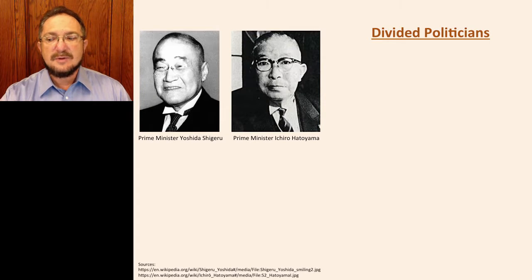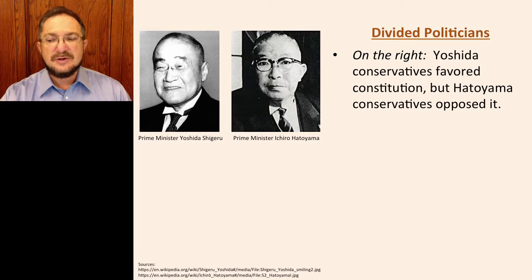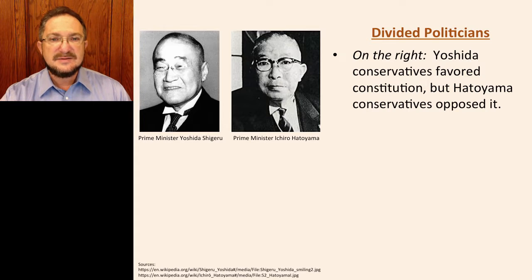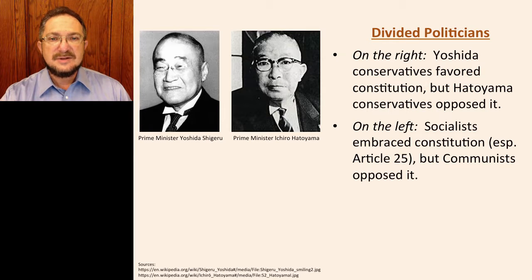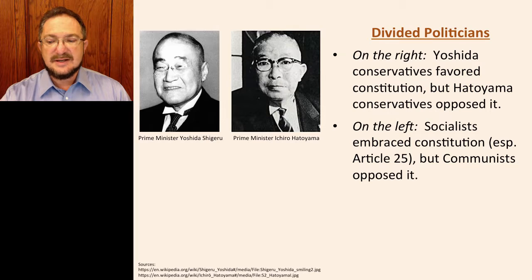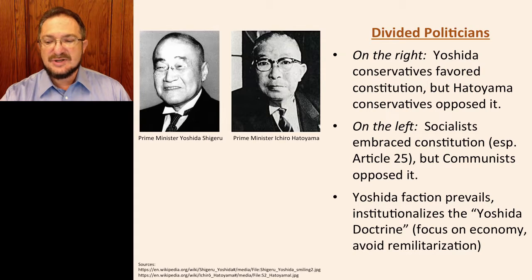Japanese political leaders, however, were much more divided. On the political right, some conservatives, most notably Prime Minister Yoshida, favored accepting the constitution and avoiding divisive questions such as whether or not to remilitarize, instead focusing on rebuilding the economy. Other conservatives, such as Hatoyama Ichiro, wanted greater power restored to the emperor and for Japan to have a real independent military — these conservatives found the constitution objectionable. On the political left, the socialists embraced the constitution, especially the renunciation of war clause and Article 25, which held that all people are entitled to wholesome and cultured living and that the state must promote social welfare and public health. However, the communists objected to the constitution because it allowed the continuation of the emperor system.